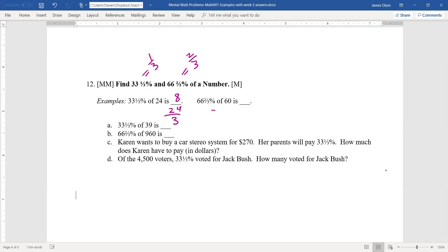In the next example, we want 2/3 of 60. 1/3 of 60 is 20 and I want 2 of those. That's 40.